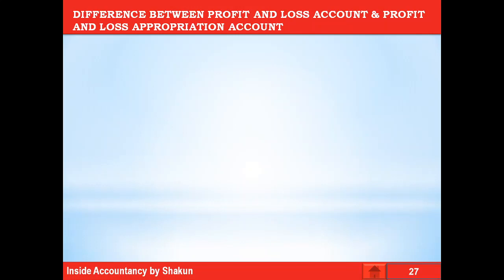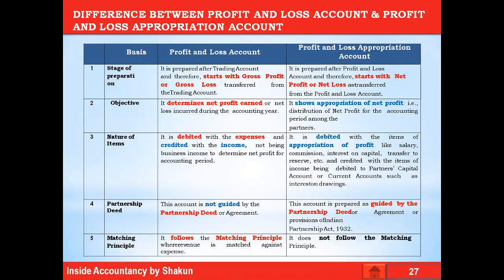Now let's talk about the difference between profit and loss account and profit and loss appropriation account. As studied in class 11th, a profit and loss account shows us the net profit earned. The profit and loss account is prepared after the trading account — after we get the gross profit or gross loss, which is transferred from the trading account to the profit and loss account. This profit and loss account helps us in determining the net profit. The profit and loss appropriation account, on the other hand, is prepared after the profit and loss account. It starts with the net profit or net loss and shows the various appropriations — that is, the distribution of net profit for the accounting period amongst the partners.